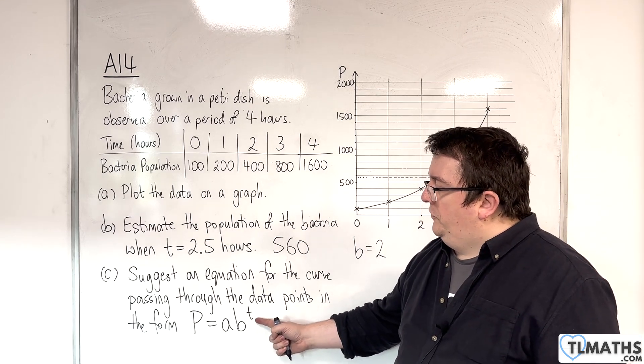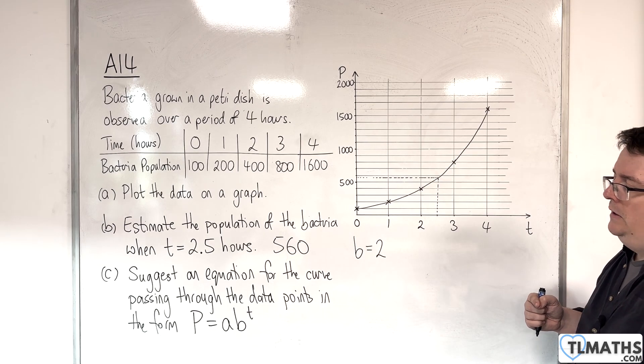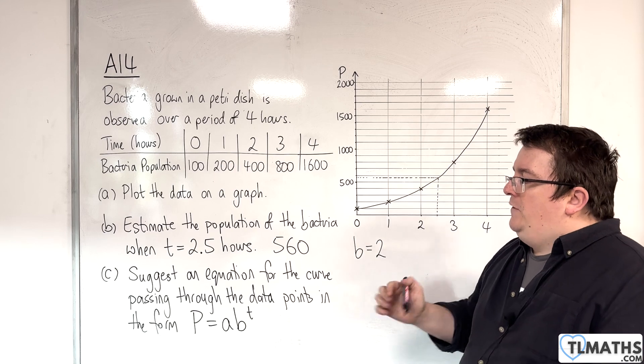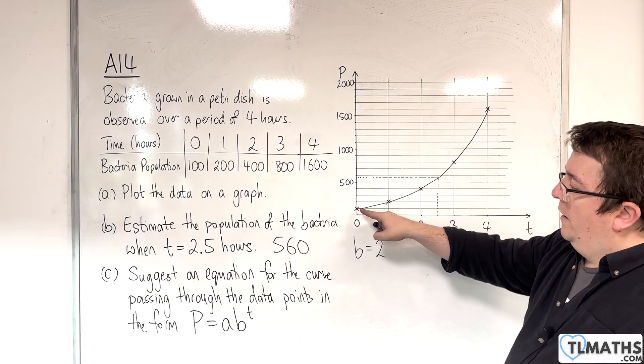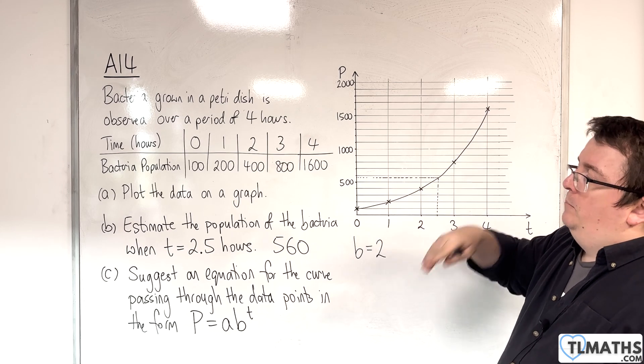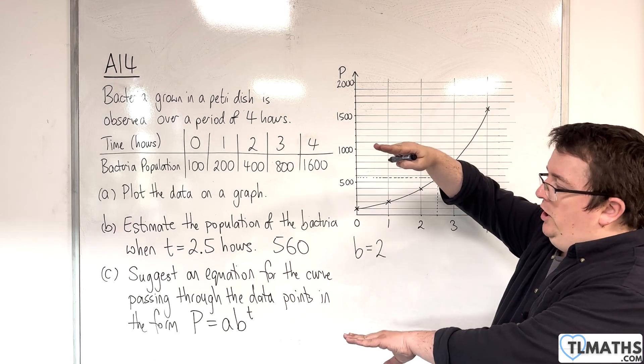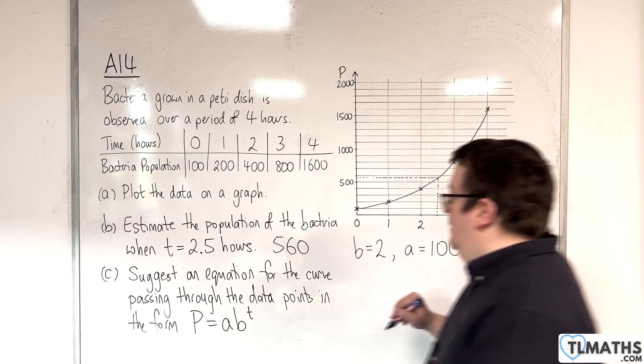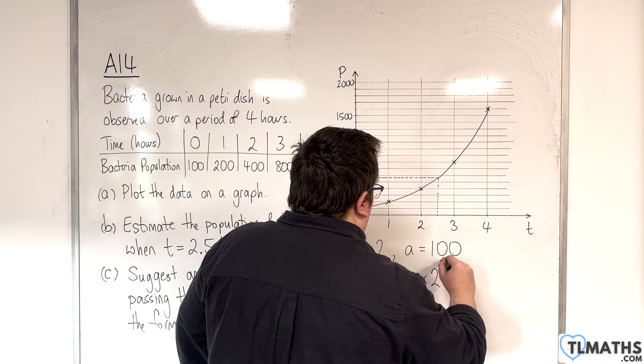It's going to start off with 2 to the 0, 2 to the 1, then 2 to the 2, 2 to the 3, 2 to the 4, etc. The A is the multiplier. Ordinarily, if you just had 2 to the power of T, or 2 to the power of X, it would be going through 1 on the Y-axis. But we're going through 100, so it's been multiplied by 100 to stretch it upwards. So that means that the A must be 100. P equals 100 times 2 to the power of T.